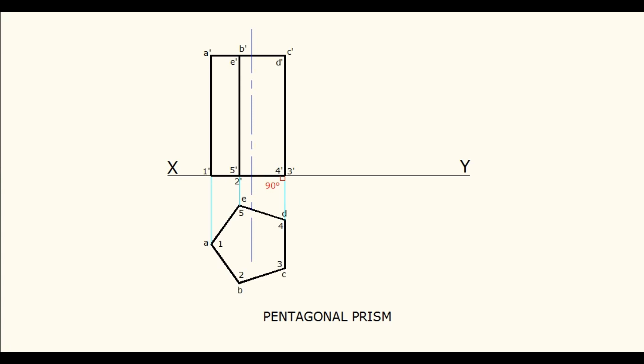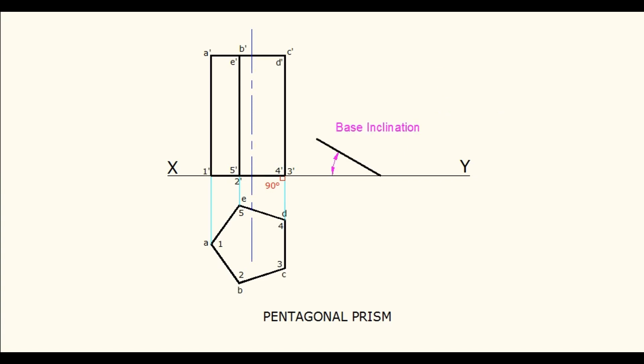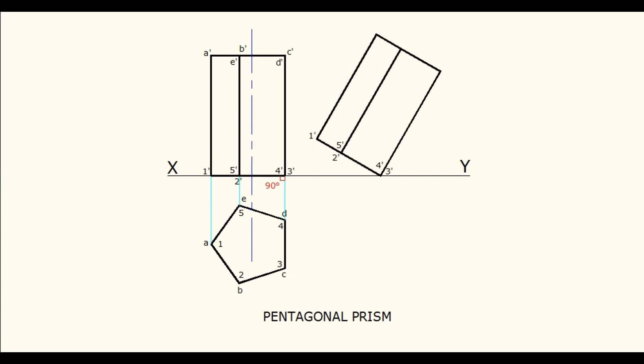To draw the second stage elevation, we should consider the inclination of the object with HP. If the inclination of the axis is given, the side or rectangular face will also have the same inclination. If the base inclination is given, that angle should be taken on the base. Thereby, redraw the second stage elevation for the given inclination. Mark numbers on the bottom and top corners. For drawing the axis line, take the measurement from the first stage elevation, then mark it on the second stage elevation and draw the axis.